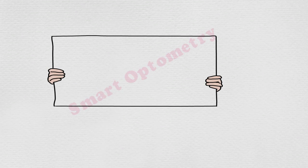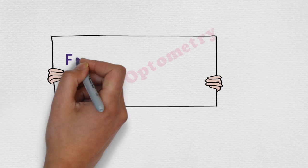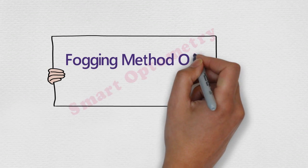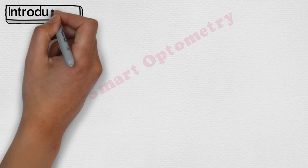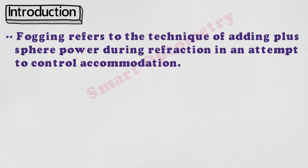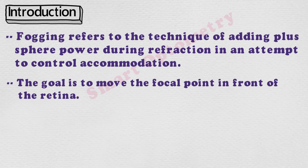In this video, I will discuss the fogging method of binocular refraction. Fogging refers to the technique of adding plus power during refraction in an attempt to control accommodation. The goal is to move the focal point in front of the retina.